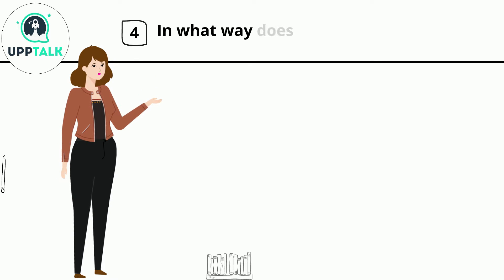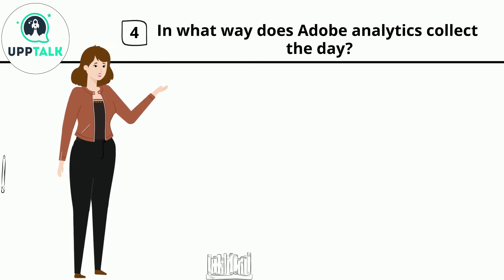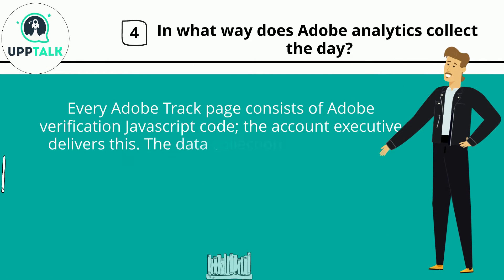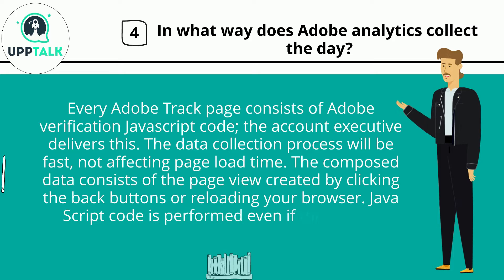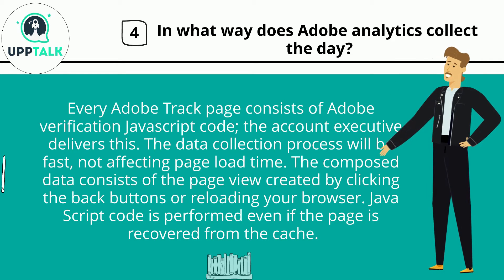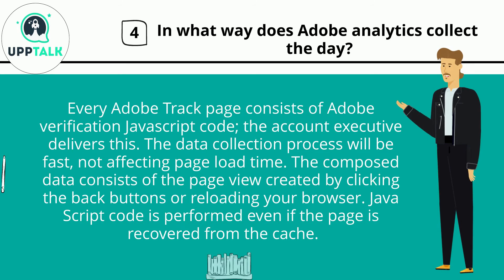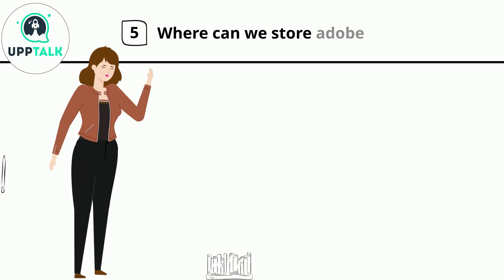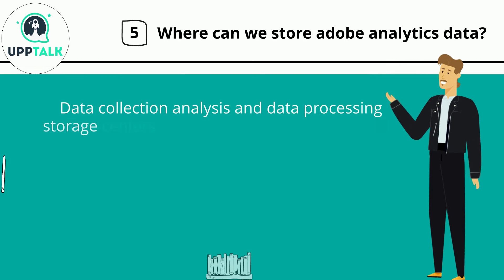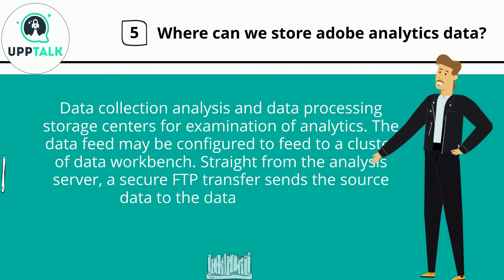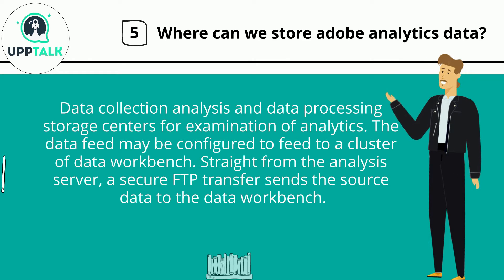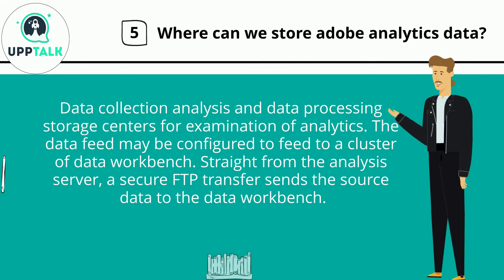Question 4: In what way does Adobe Analytics collect data? Every Adobe track page consists of Adobe verification JavaScript code, which the account executive delivers. The data collection process will be fast, not affecting page load time. The composed data consists of page views created by clicking the back button or reloading your browser. JavaScript code is performed even if the page is recovered from the cache. Data collection, analysis, and data processing storage centers are used for examination of analytics. The data feed may be configured to feed to a cluster of data workbench, and a secure FTP transfer sends the source data to the data workbench straight from the analysis server.